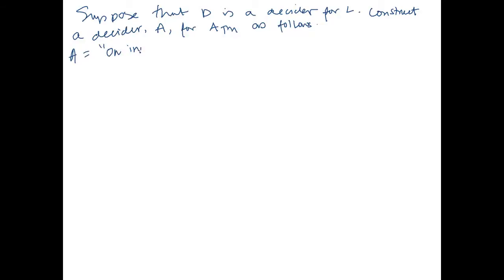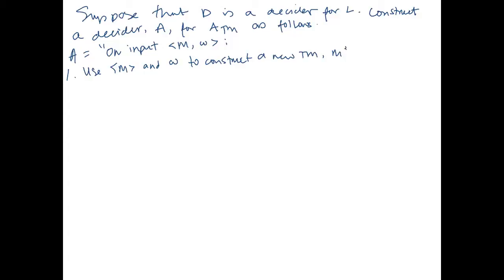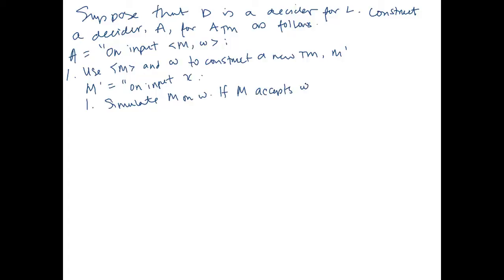A takes input ⟨M, W⟩, where M is a Turing machine and W is a string. The first thing it does is use the description of M and W to construct a new Turing machine M′. M′ takes any input X. The first thing it does is simulate M on W. If M accepts W, then M′ accepts whatever input it received.